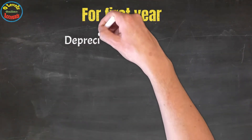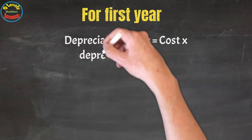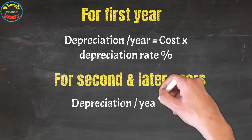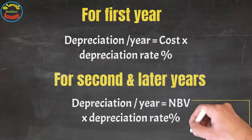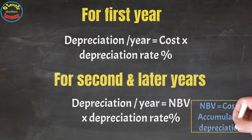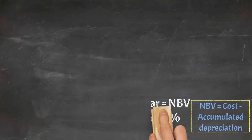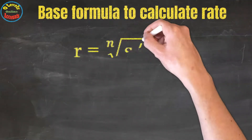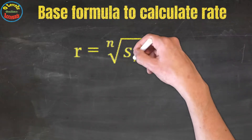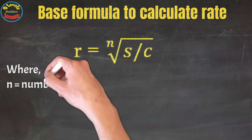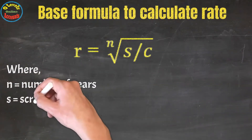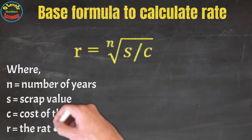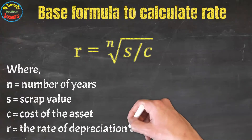To calculate depreciation for the first year: cost multiplied by depreciation rate percentage. For the second year: net book value multiplied by rate percentage. The net book value is equal to cost minus accumulated depreciation. The base formula to calculate rate through RBM is: R = nth root of (scrap value divided by cost of asset), where n equals number of years, S equals scrap value, C equals cost of the asset, and R is the rate of depreciation to be applied.